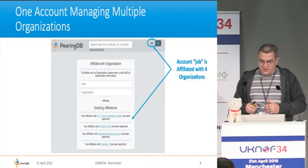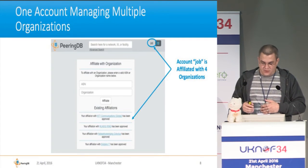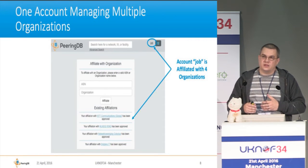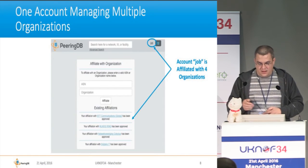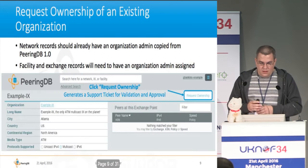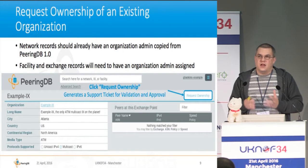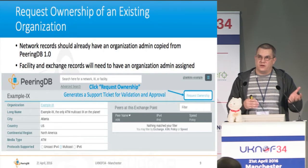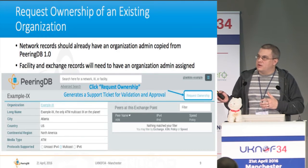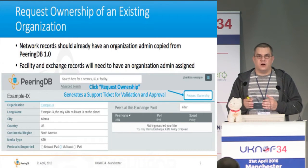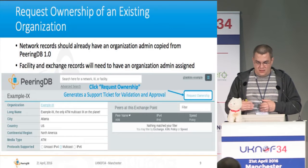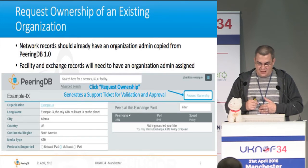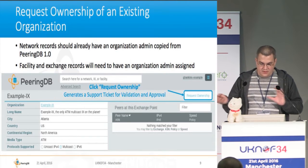Here's an example of one account managing multiple organizations. In this case the account is associated with four different organizations, and it's very easy to affiliate with another. If you are an existing network operator, this probably doesn't apply to you — network operators already had admin accounts and those were copied over to 2.0. But if you are an Exchange Point operator or a facility owner, you'll definitely want to request ownership of your records so you can update and edit the information.